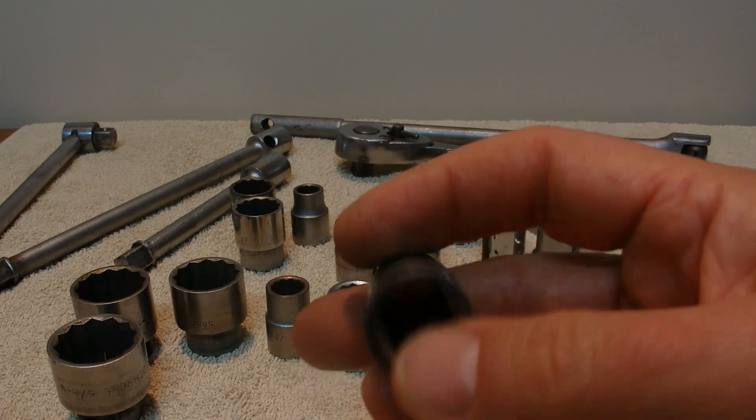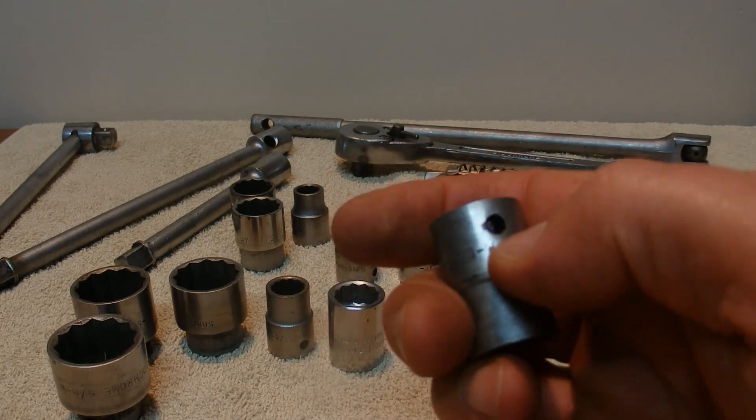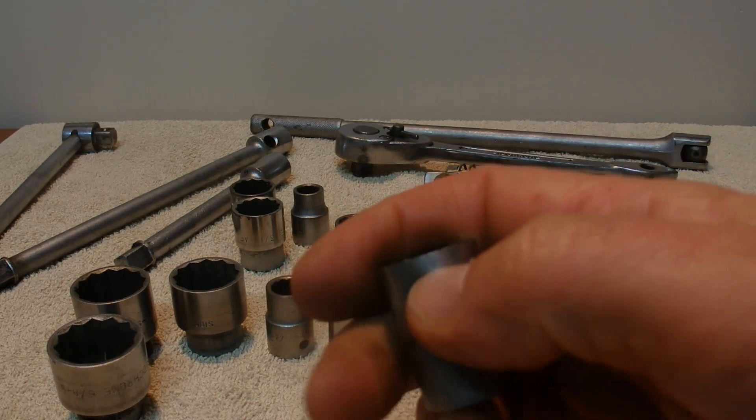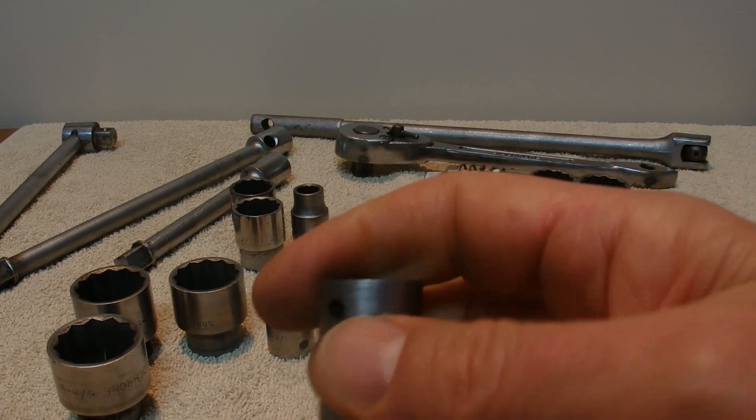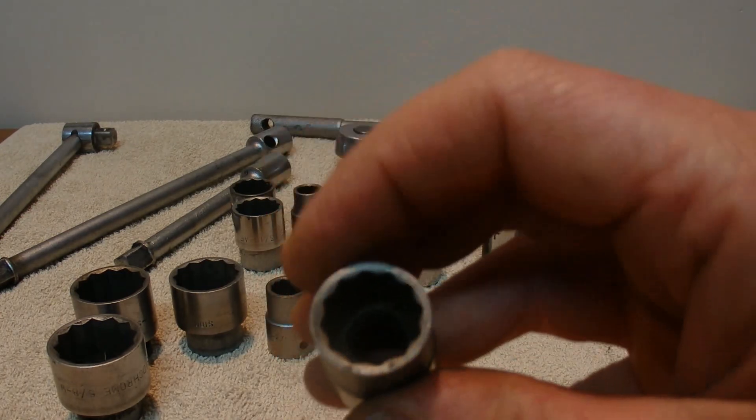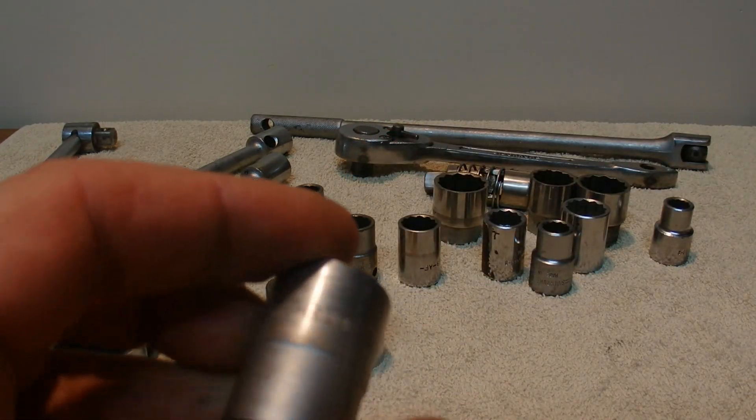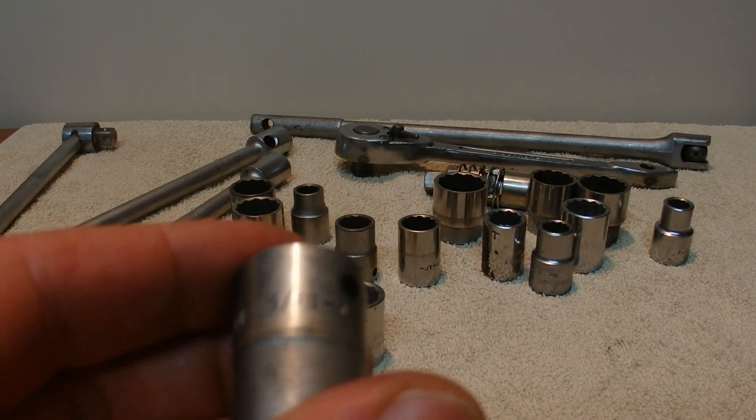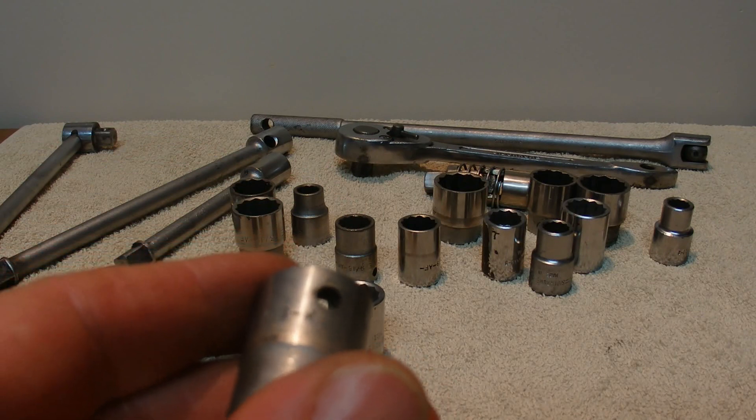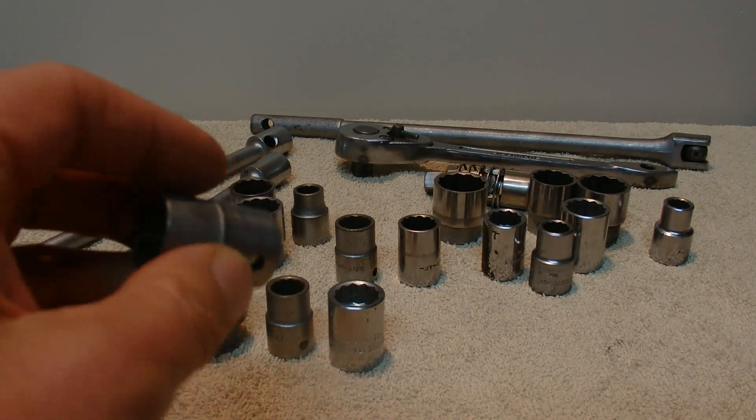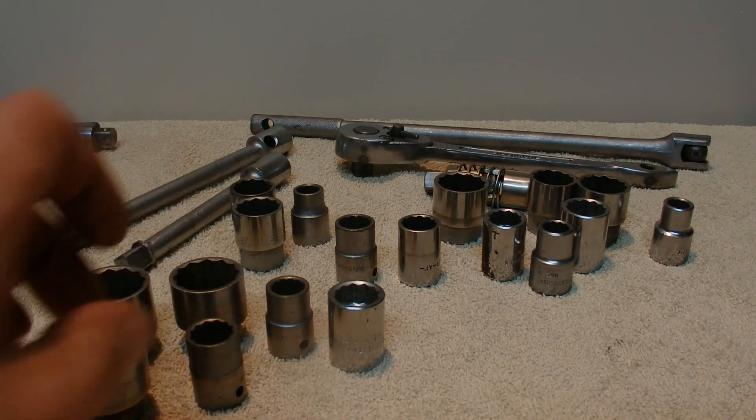And the next socket to look at. Square end. You've got the little hole there for the little ball on the end of the handle. Serrations in there. And the size of this one. Sidchrome. 5/16ths. And that's a for Whitworth measurement.